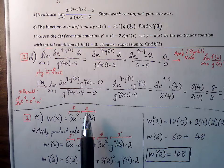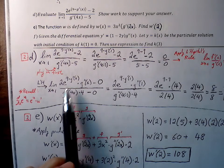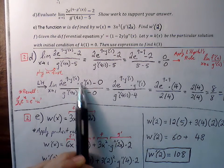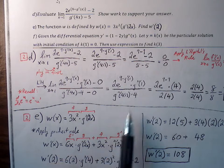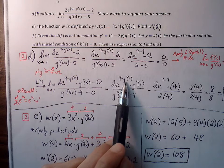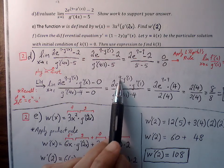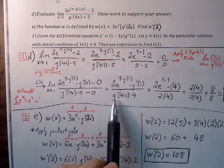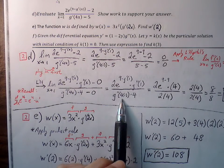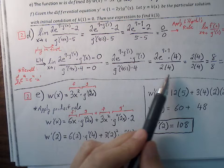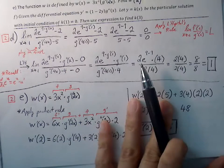Now we re-evaluate by plugging one in for the remaining x's. We get G prime of one and G double prime of one in the numerator, and G double prime of four times four in the denominator. G prime of one is nine, so nine minus nine is zero. Two times e to the zero times G double prime of one — which is four from our table — gives two times one times four, which is eight. G double prime of four is two, so G double prime of four times four equals eight. Eight over eight equals one, so our limit is one.